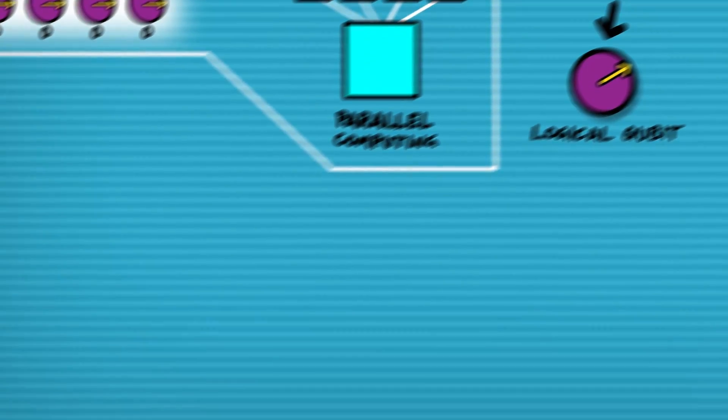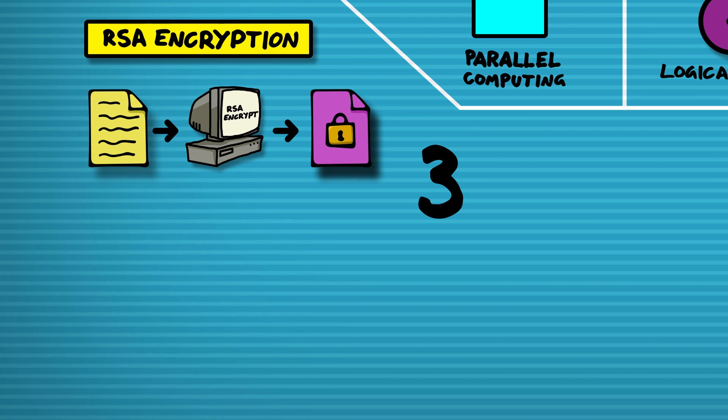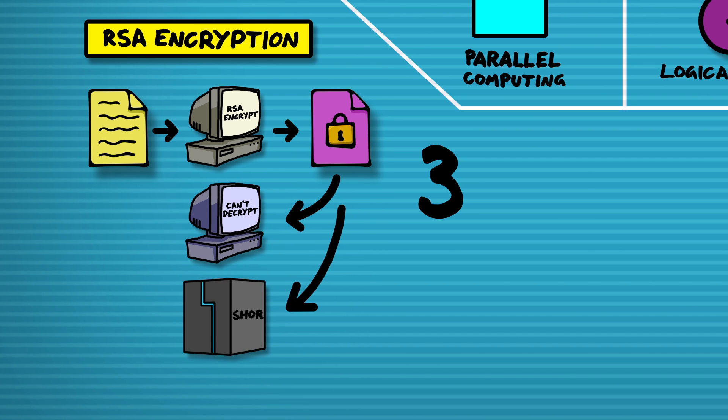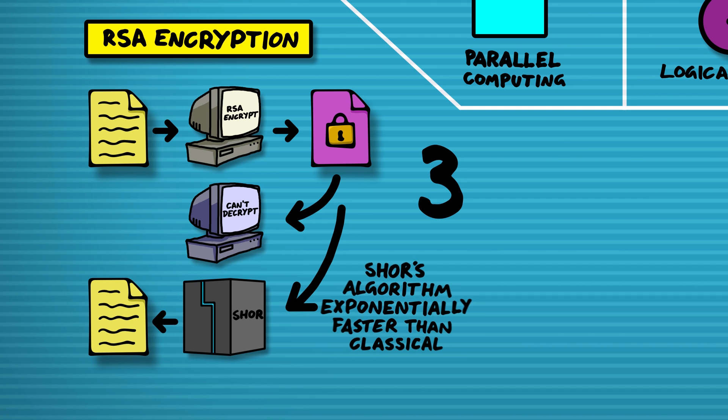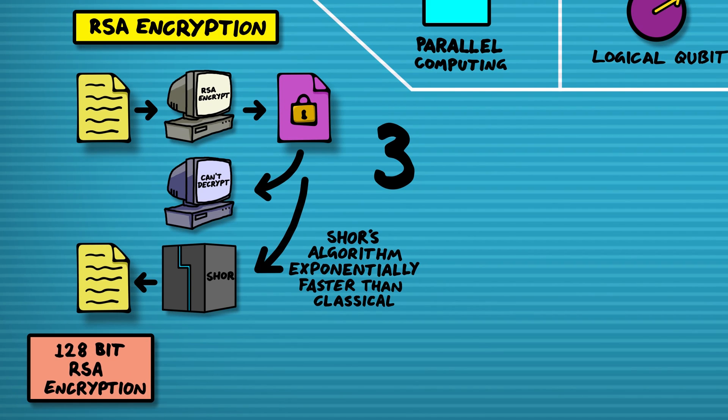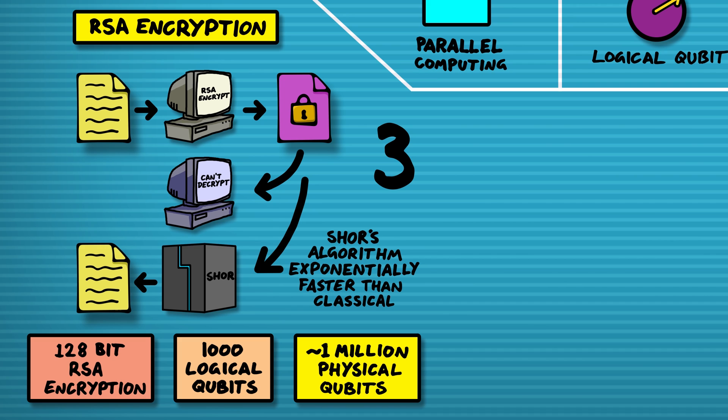That brings me to point three: quantum computers and internet encryption. A lot of internet encryption is based on the fact that it's really hard to factor large numbers on a classical computer. There's a quantum algorithm called Shor's algorithm that can theoretically factor these large numbers exponentially faster than the best classical algorithm. The trouble is, for standard 128-bit encryption you'd need about 1,000 qubits for Shor's algorithm to run, meaning you'd need a million or more physical qubits. Currently the best is 72 qubits that Google has in the universal quantum computing scheme, so it's going to be a very long time until we hit a million. For the time being, your internet secrets are safe.